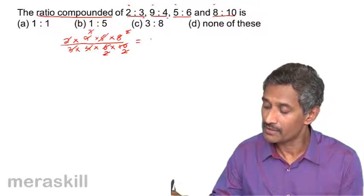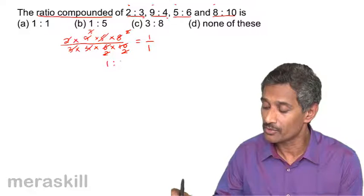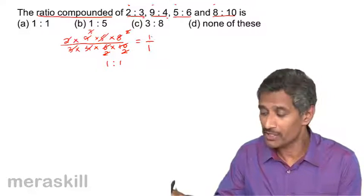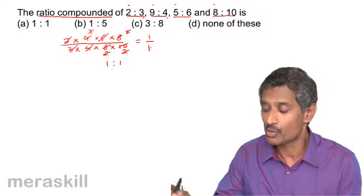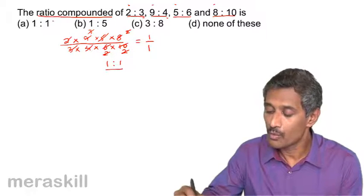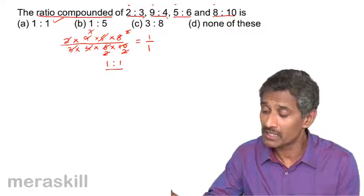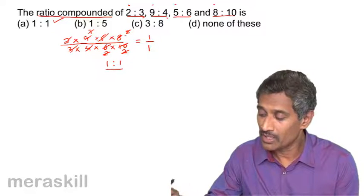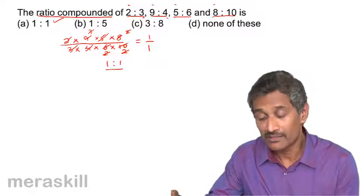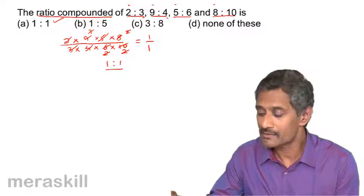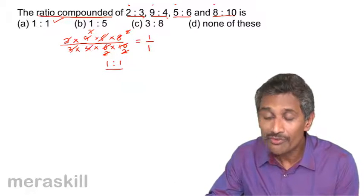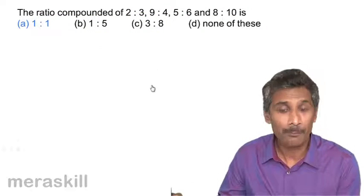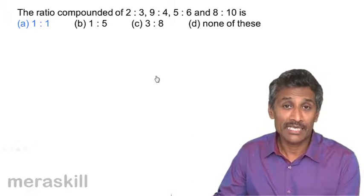After simplification, we're getting 1 is to 1. The answer is 1:1. So what we've done is multiplied all the antecedents to find their product, multiplied all the consequents, found the ratio of these results, and that gives the compounded ratio. The answer is 1 is to 1.